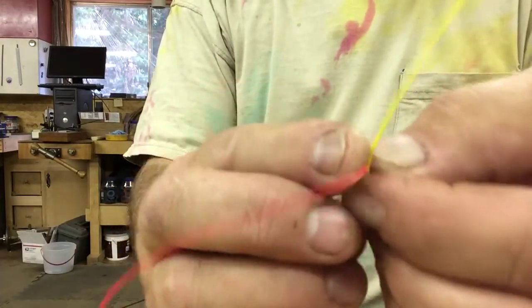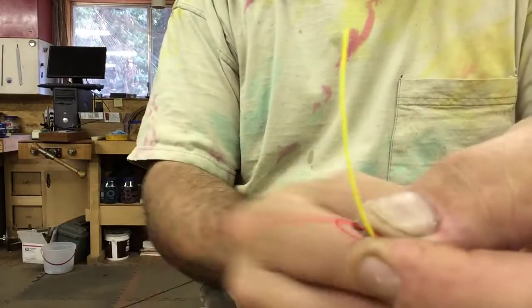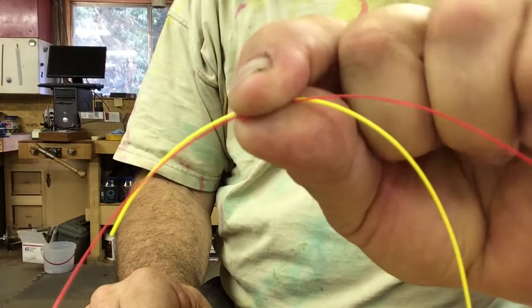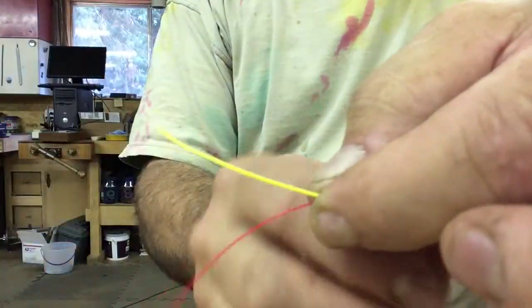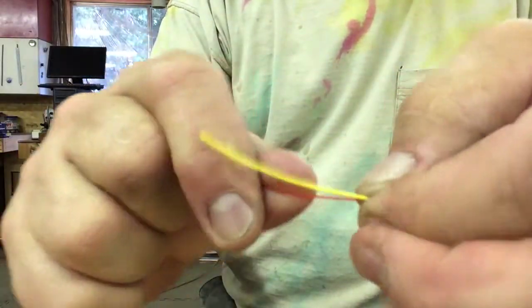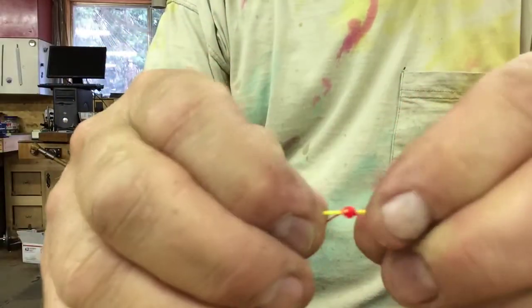Push the whole works back out the other way. And we have the tag end now sticking out over here. Right over here. Then we're going to work each end snug. Until I can let go a little bit. Lube it up. A little spit works good.